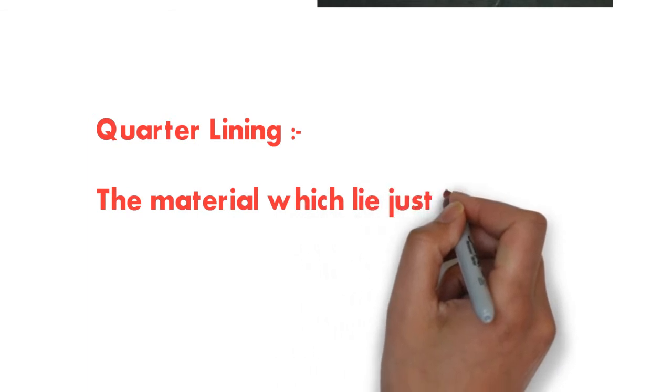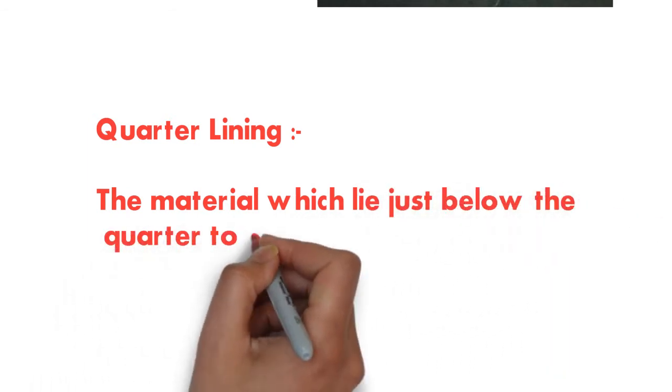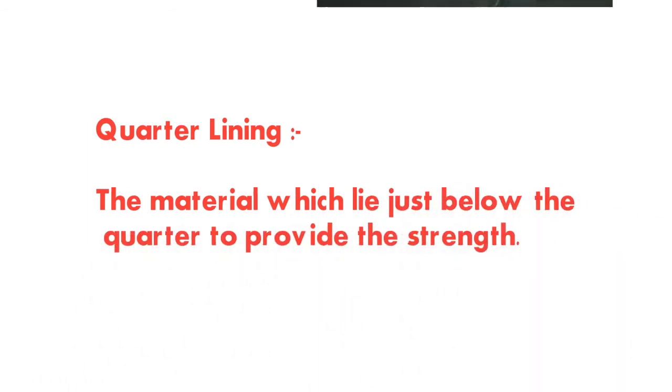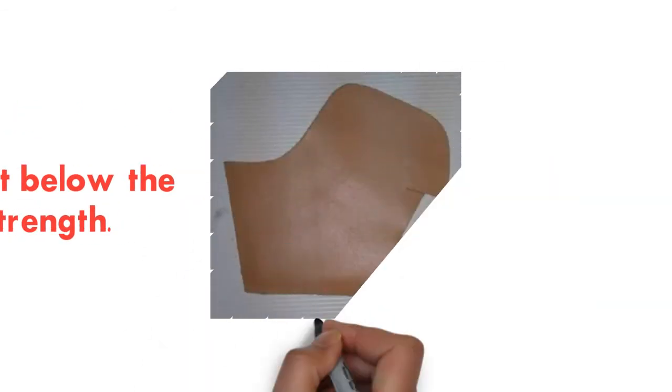And the second one is quarter lining. The material which lies just below the quarter is called quarter lining. And it has also two quarter linings: inside and outside.